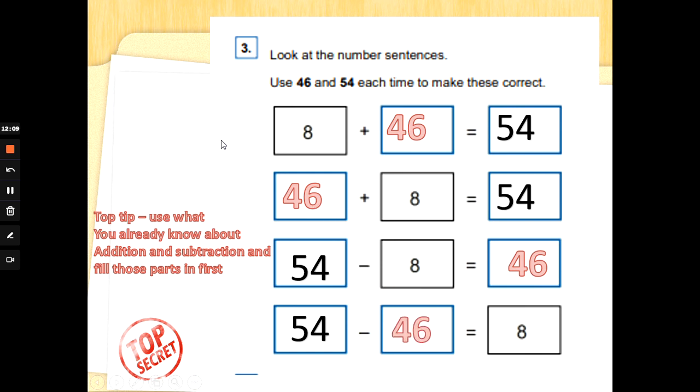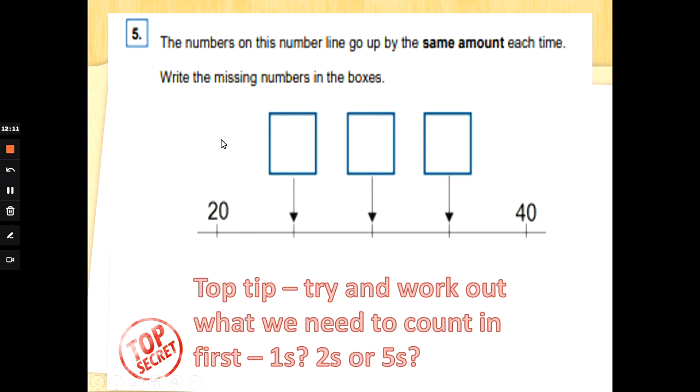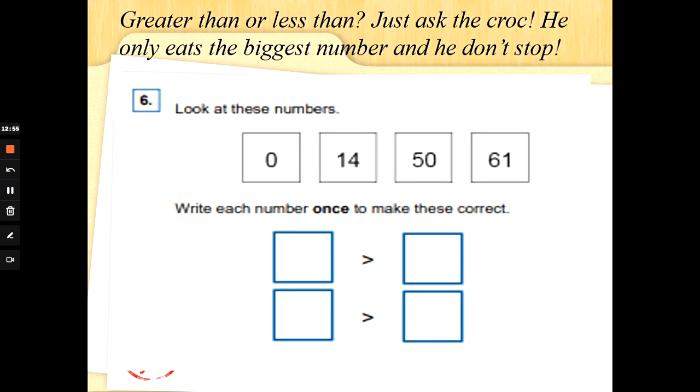Excellent work. Number five. The numbers on this number line go up by the same amount each time. Write the missing numbers in the boxes. Top tip. We need to work out, because it doesn't tell us, whether this number line is counted in ones, twos, or fives. Let's try ones first. Twenty, twenty-one, twenty-two, twenty-three, forty. Nope, that doesn't sound right. What about twos? Twenty, twenty-two, twenty-four, twenty-six, forty. No, it can't be that one. Twenty, twenty-five, thirty, thirty-five, forty. Yes, that works. We're counting in fives. So let's fill in the numbers using our five times table. Twenty, twenty-five, thirty, thirty-five, forty. Well done. We've just got to stop and do a bit of working out first of all.